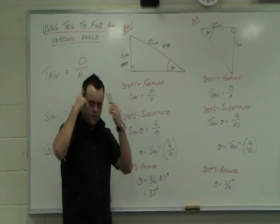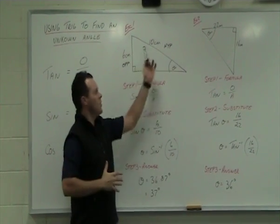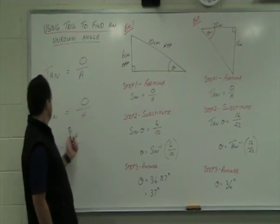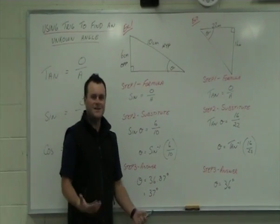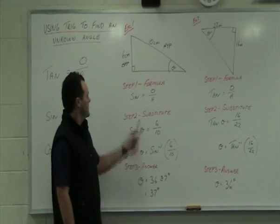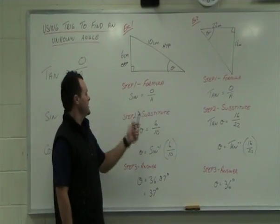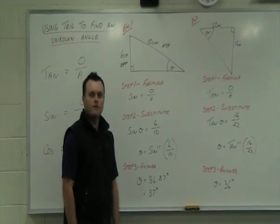So in our head, we need to be thinking, which one uses opposite and hypotenuse? And that is an easy answer. It's sine. So therefore, write the formula down. Sine is equal to opposite over hypotenuse.